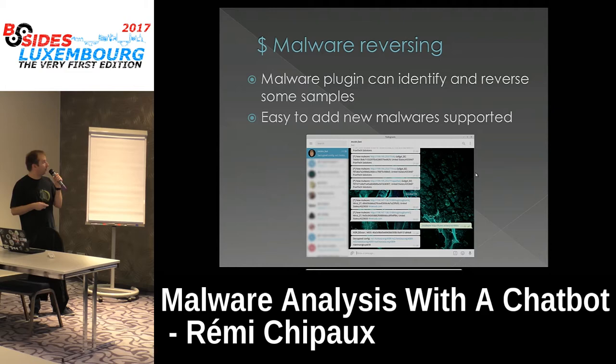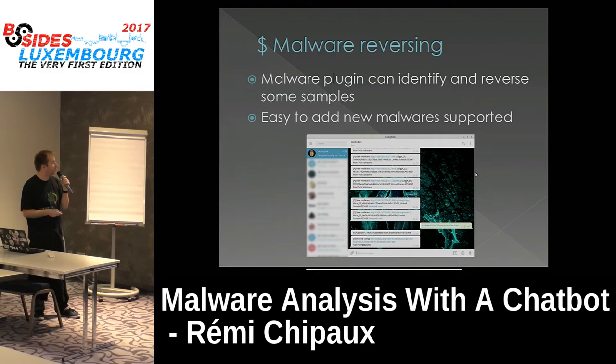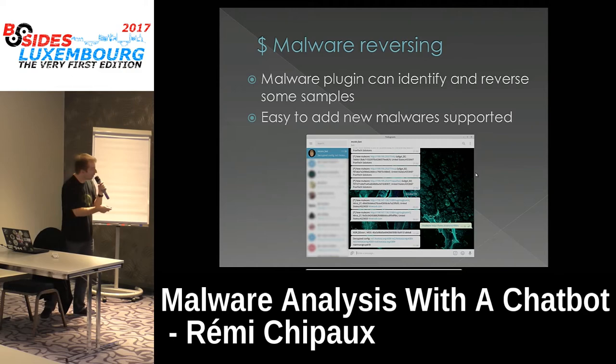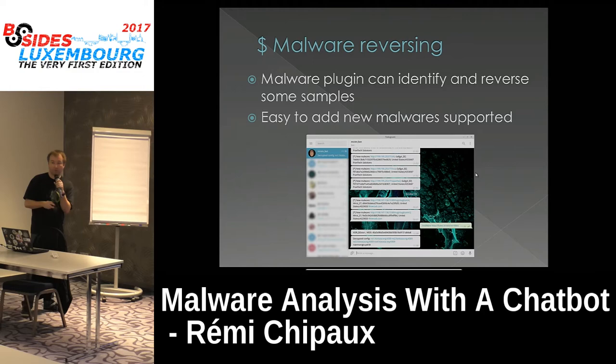I developed a malware plugin too. It's quite useful because it can automatically reverse the sample. You put the command /malware with the drop site URL, it downloads the sample via Tor, passes it through YARA rules which identify the type, returns the MD5 hash, and decrypts the configuration. For XOR DDoS, it just runs the Python XOR script and decrypts the C2 configuration automatically.